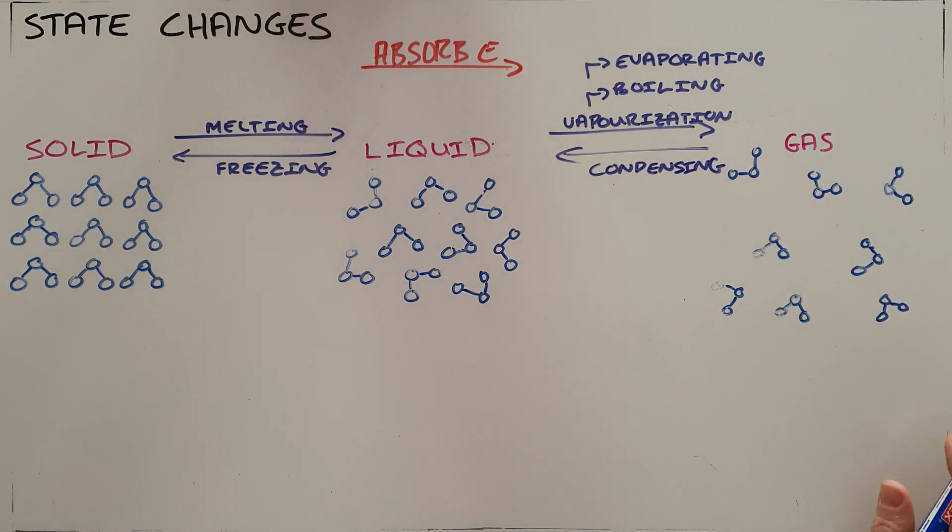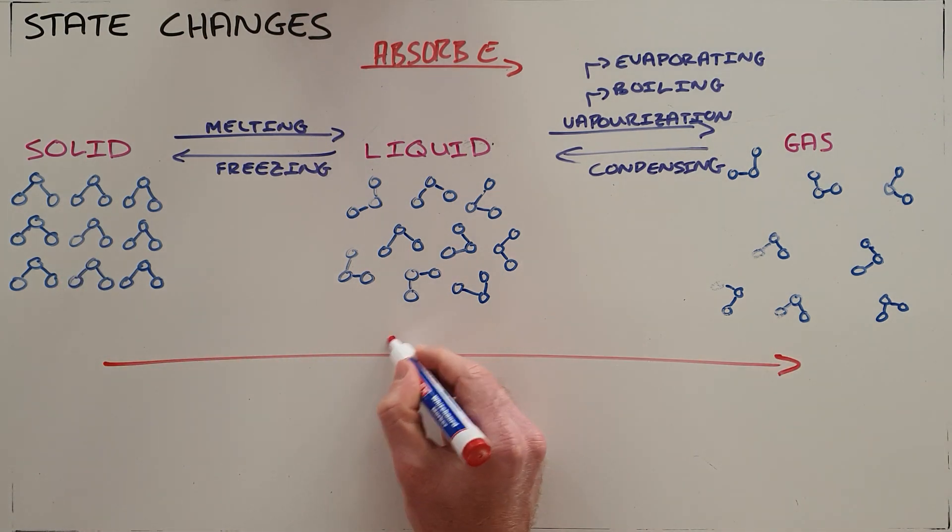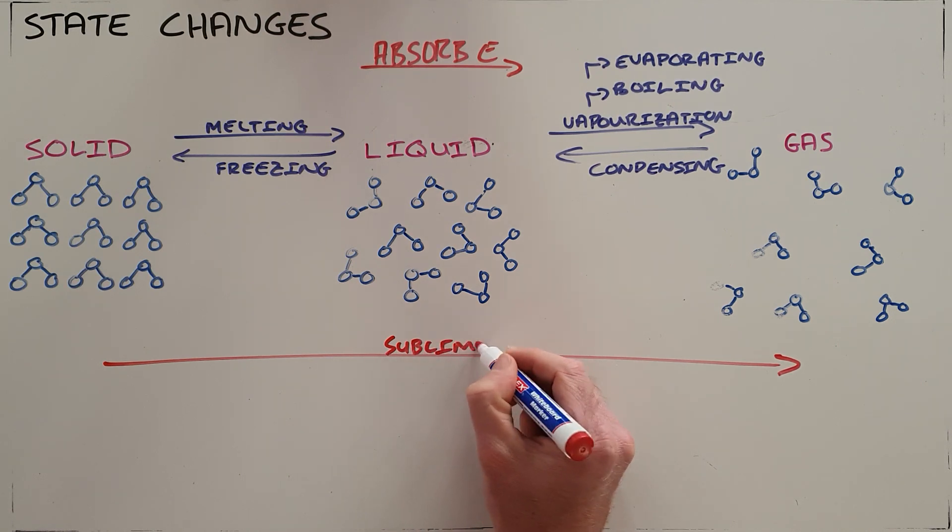And then finally there is a possible state change from a solid to a gas. This is only under very specific conditions. Those specific conditions refer generally to a very specific pressure and temperature relationship. Where a solid goes directly into a gas is called sublimation. And we know the most common example is that of solid carbon dioxide, known as dry ice.